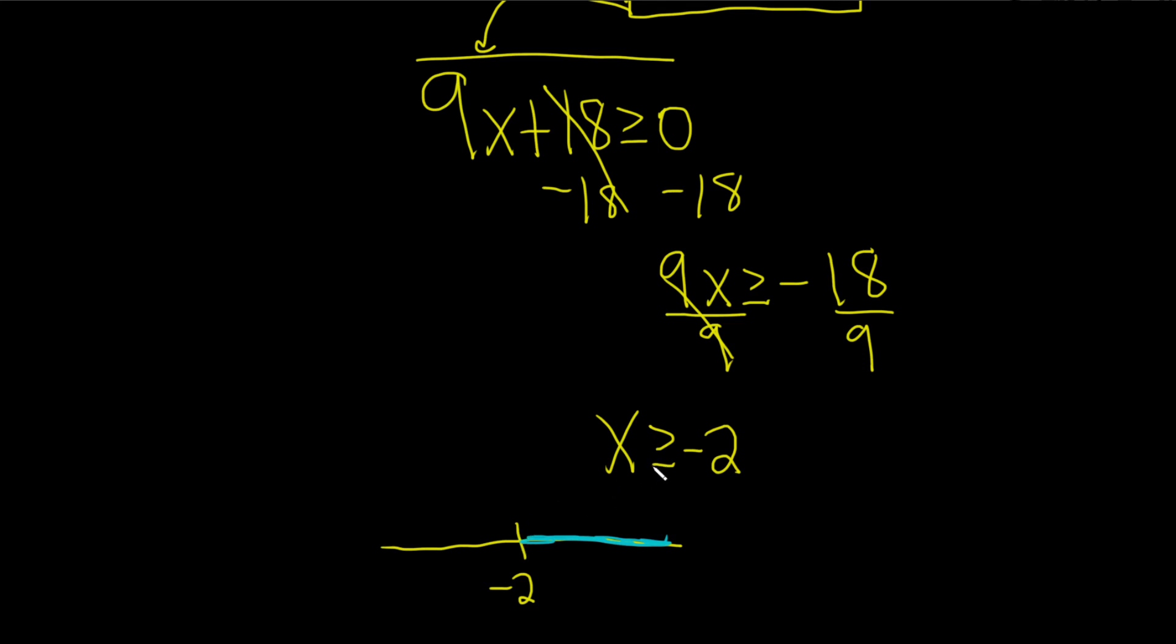So we're going to use a bracket because bracket means include. And the bracket always opens towards the shading. So it's going to look like that. And that's the answer. You can just write it down now from the picture. It will be bracket negative 2 comma infinity and then a parentheses. And this would be the domain of the function.